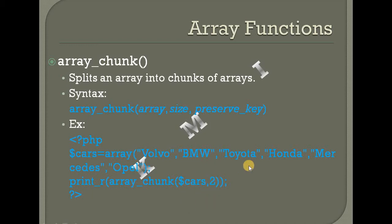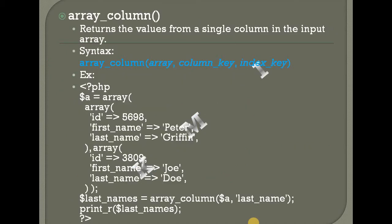You can add two sizes in the same size. For example: Volvo, BMW, Toyota, Honda, Mercedes, and Opel. You can add two or three sizes in the same size. Next, array_column — returns a value from a single column. There is a single column; you can retrieve values from a single column.